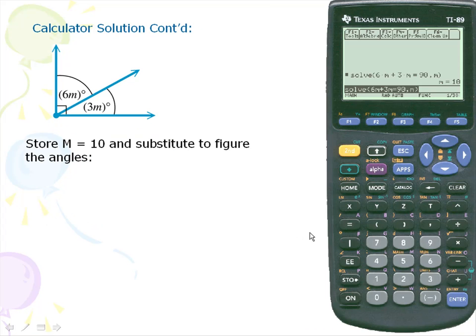Next we'll store m for 10 and substitute into the figure to get the measures of our angles. So here we'll simply take the value 10. We'll store that using the store feature.